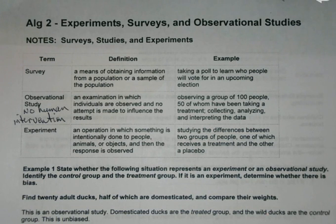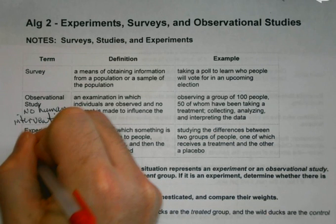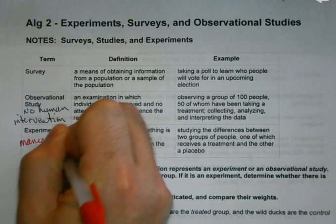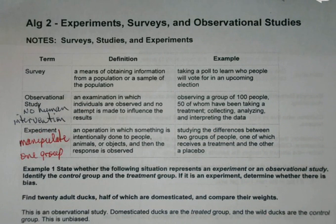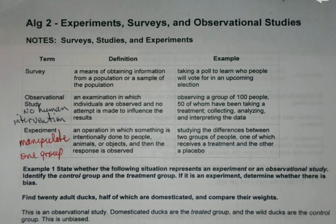But if I really want to test out something, this is more of an experiment — something you'd think of with a science-type class. You do something intentionally and then see what happens. We're going to manipulate one group. I'm going to give 50 of you a study guide for this test and 50 of you I'm not, and we're going to see how the test goes. You'd have your treatment group — the group that gets the study guide — and your placebo group — those who don't. Then we make a comparison.